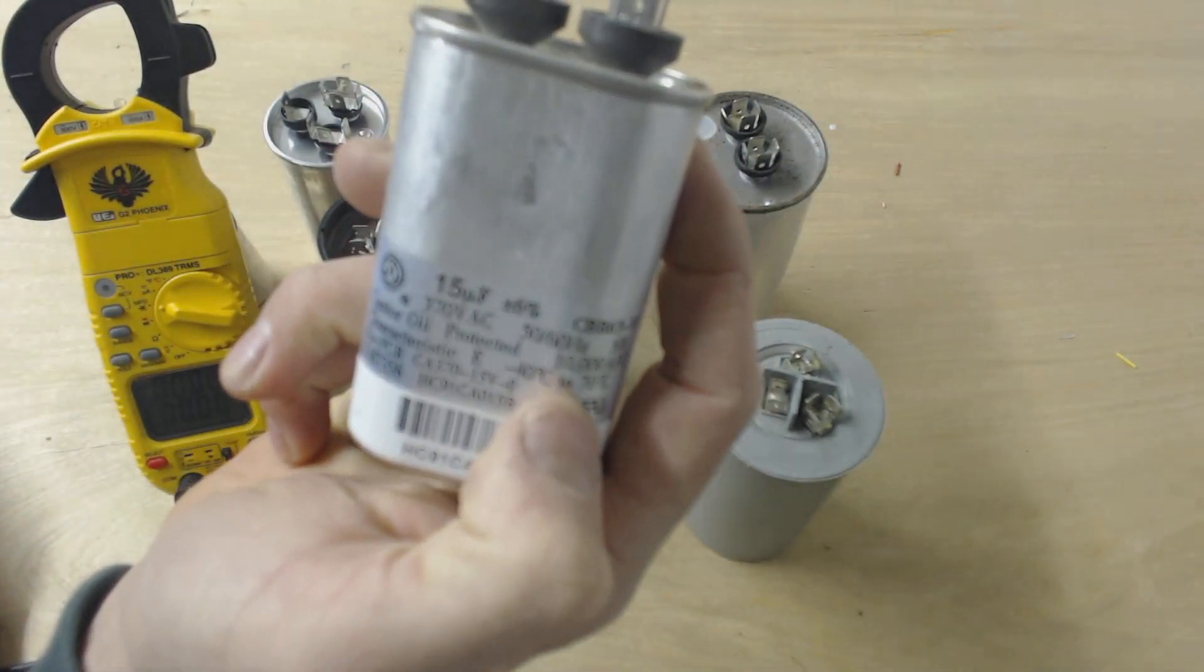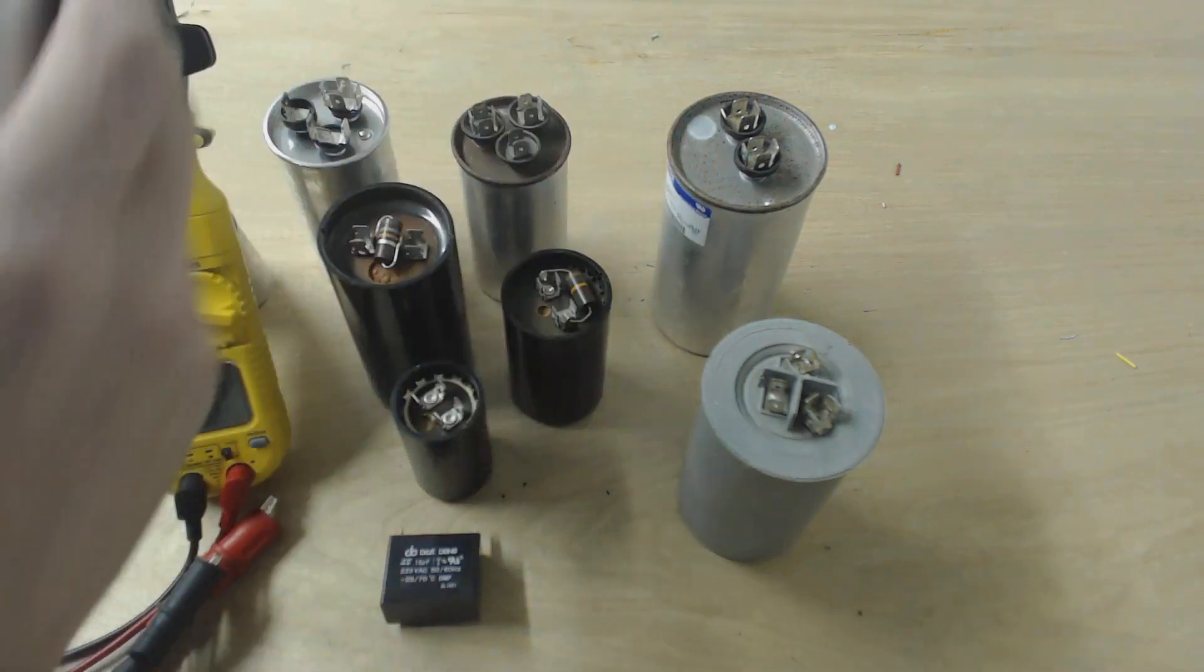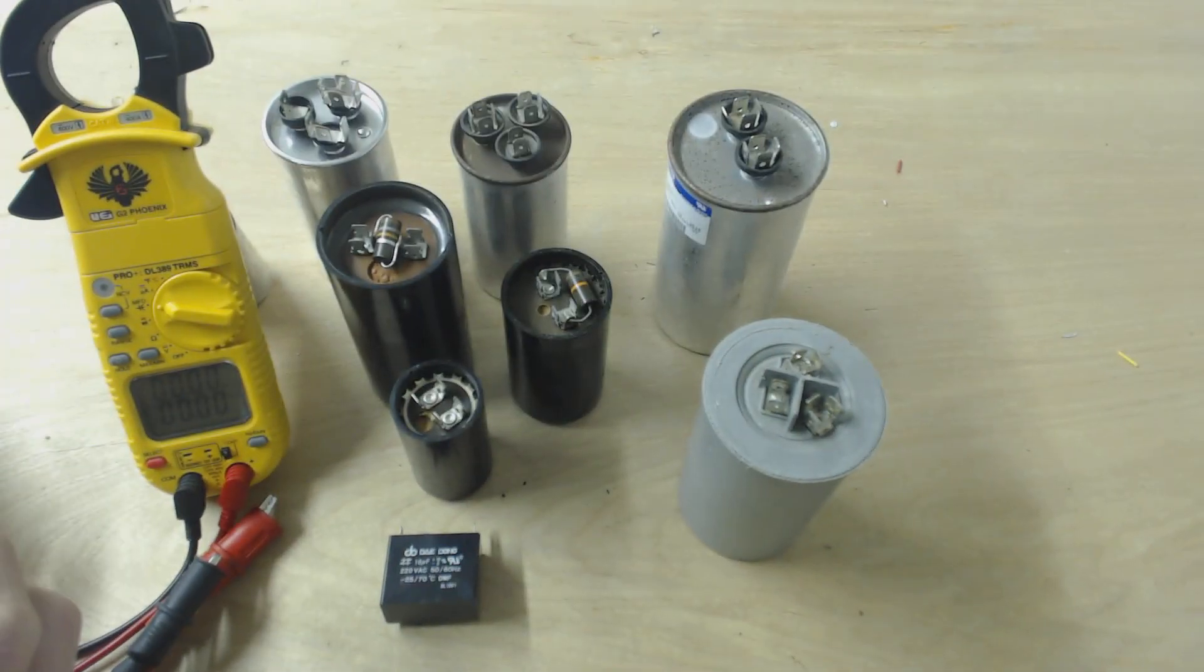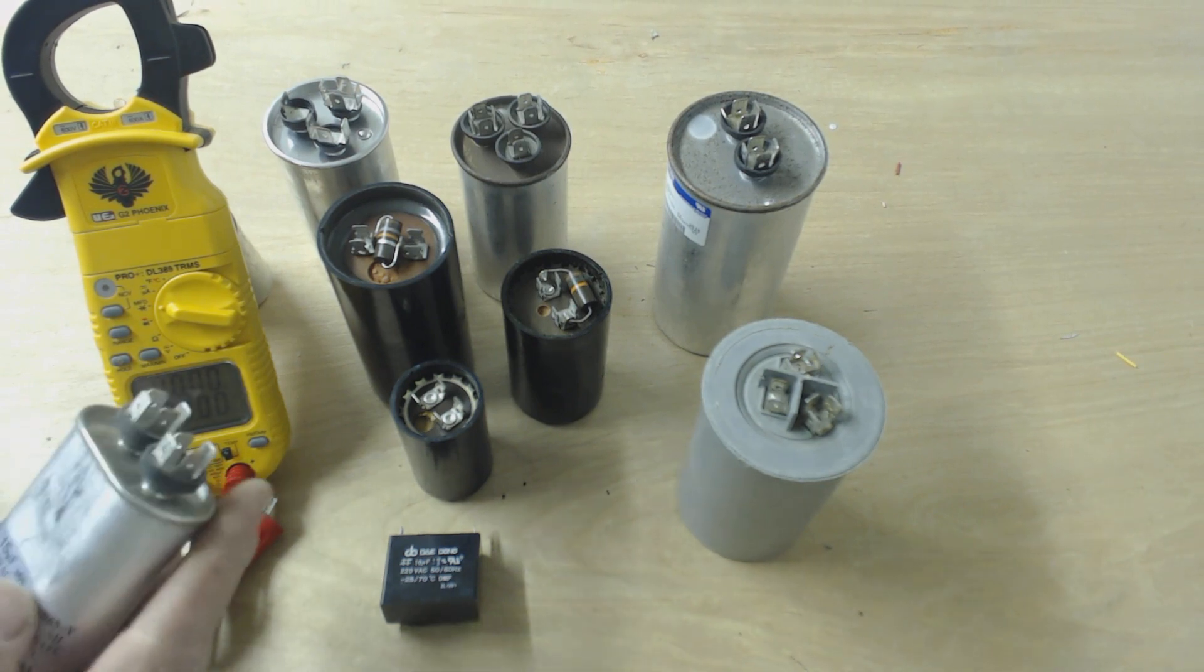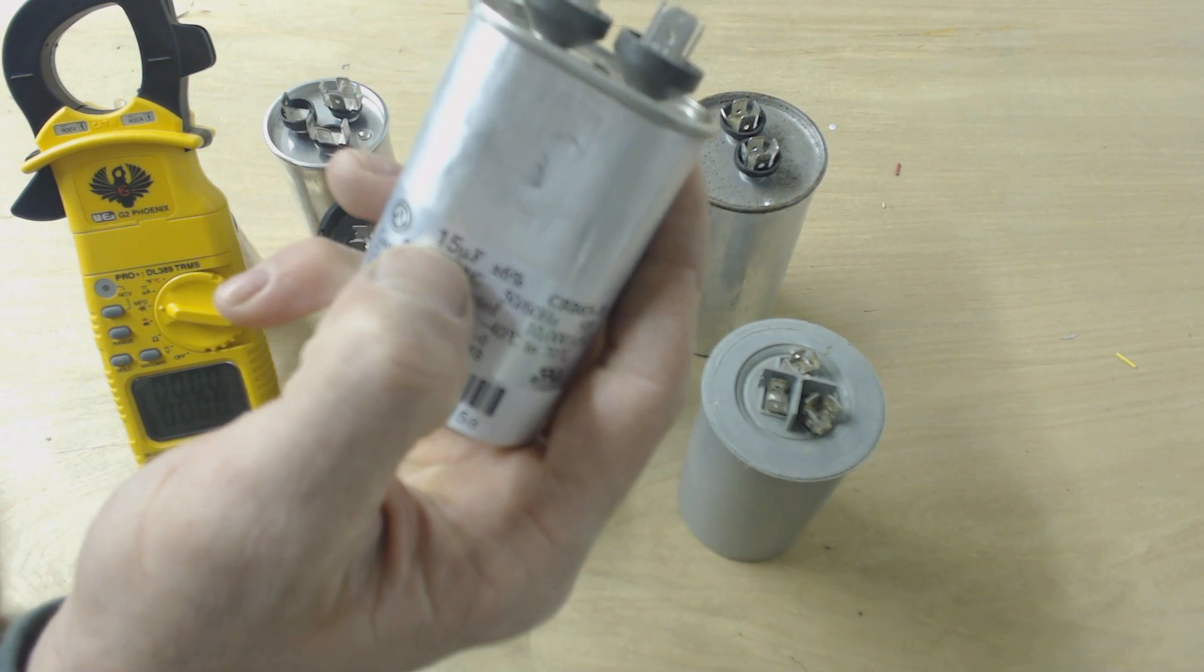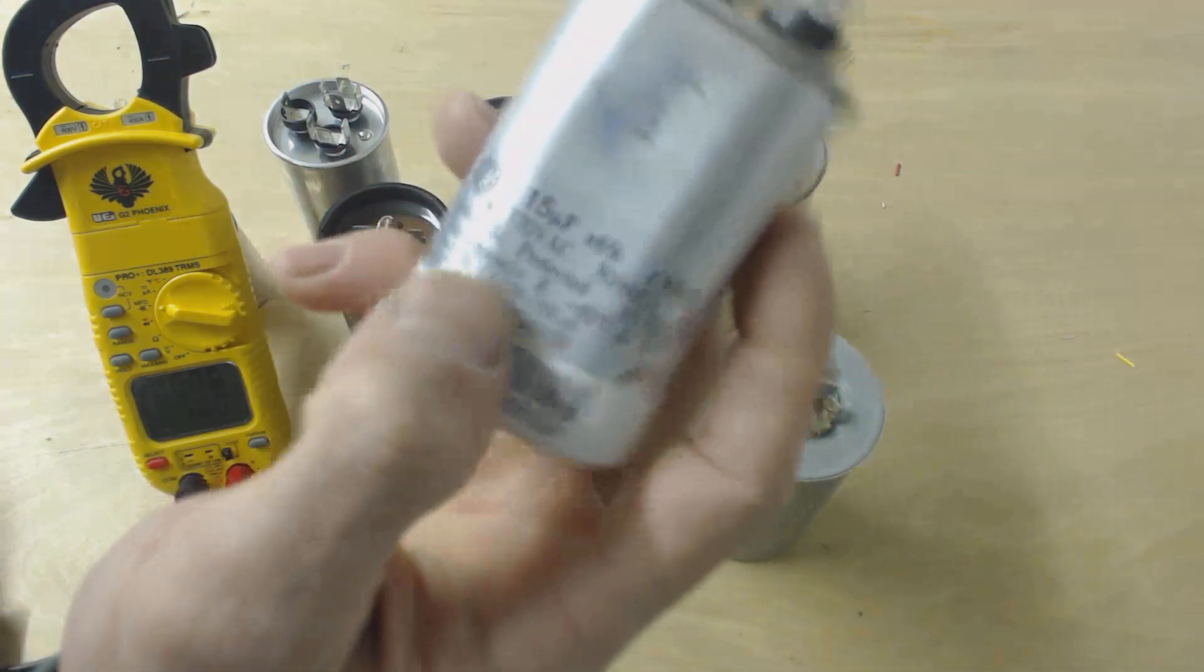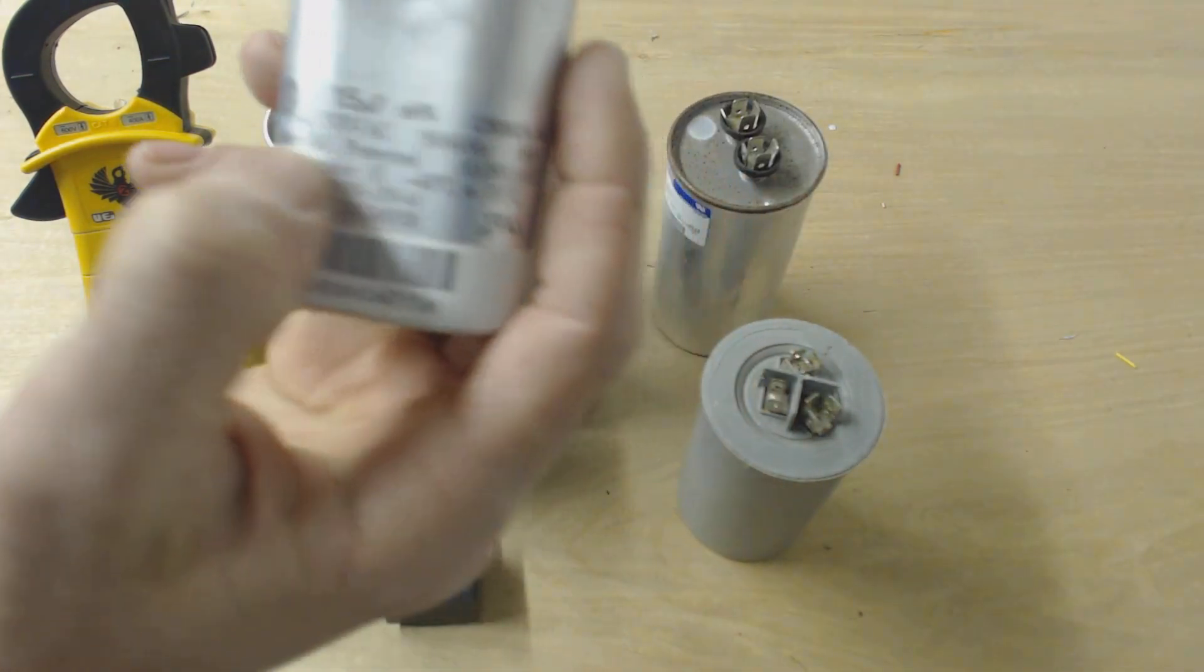This particular one is 15UF. UF and MFD are the same thing. UF is just an old manufacturing lingo, but it still means microfarads. So let's go ahead and test this one out. This one's a 15UF, and it's 370VAC.